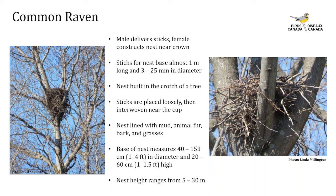Raven nest construction begins with the male bringing sticks to the nest site while the female does most of the construction. The nests are usually close to the top of the tree with a little canopy cover. Large sticks about a meter long, ranging from 3 to 25 mm in diameter, form the base, placed loosely in the crotch of the tree. Smaller sticks are then woven to form the cup, which is lined with mud, fur, shredded bark, or grasses. The base of the nest measures 40 to 153 cm in diameter and 20 to 60 cm high; nest height ranges from 5 to 30 meters.